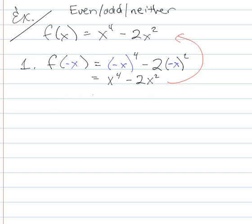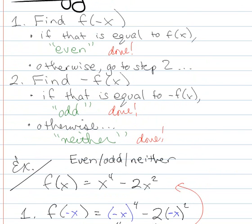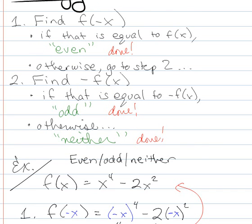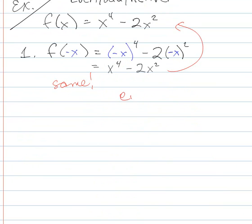And this is in fact the same, so that's the same as f of x. So if I go and I look at my strategy, it says if that's equal to f of x, then that means I have an even function and I'm done. So this is even, and I'm done.